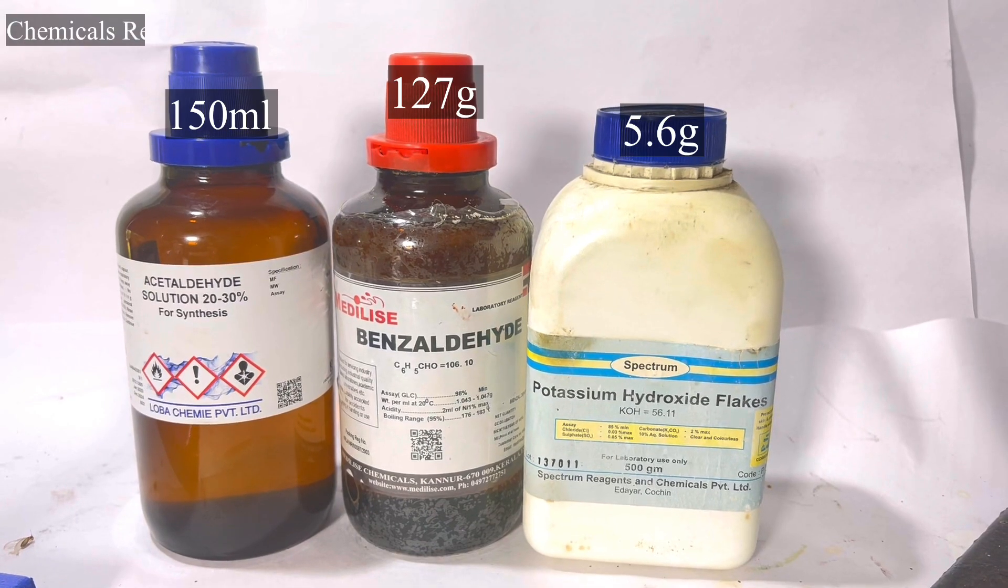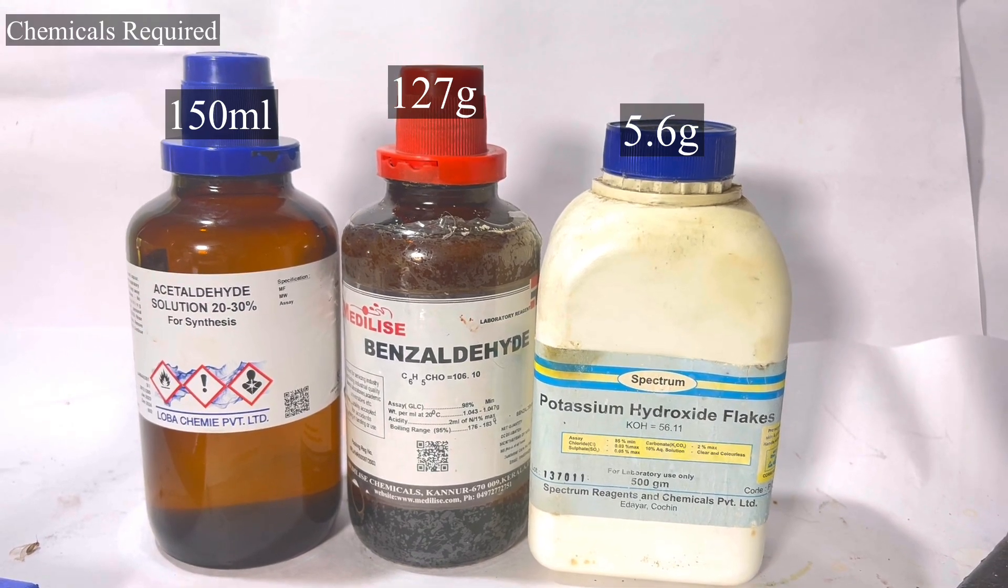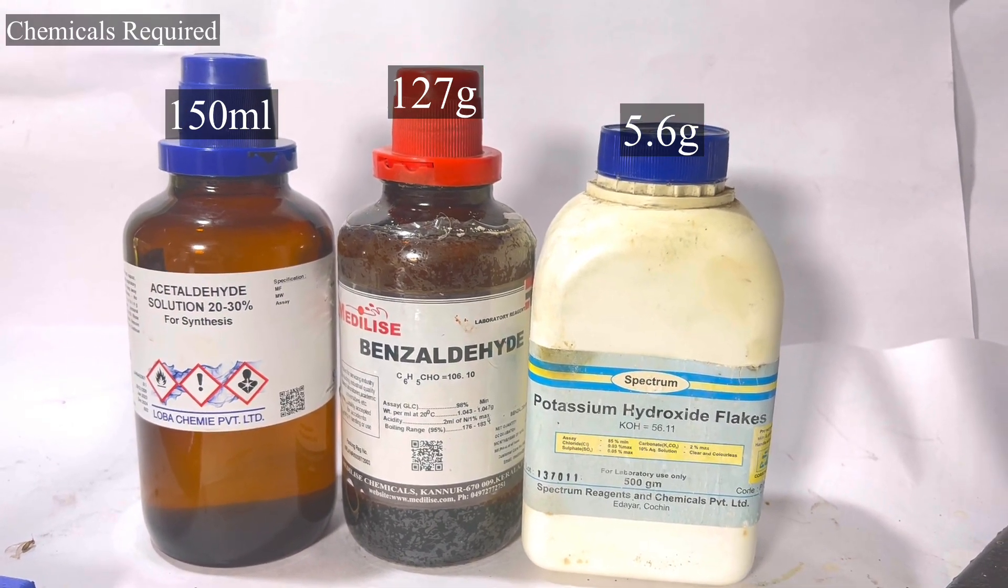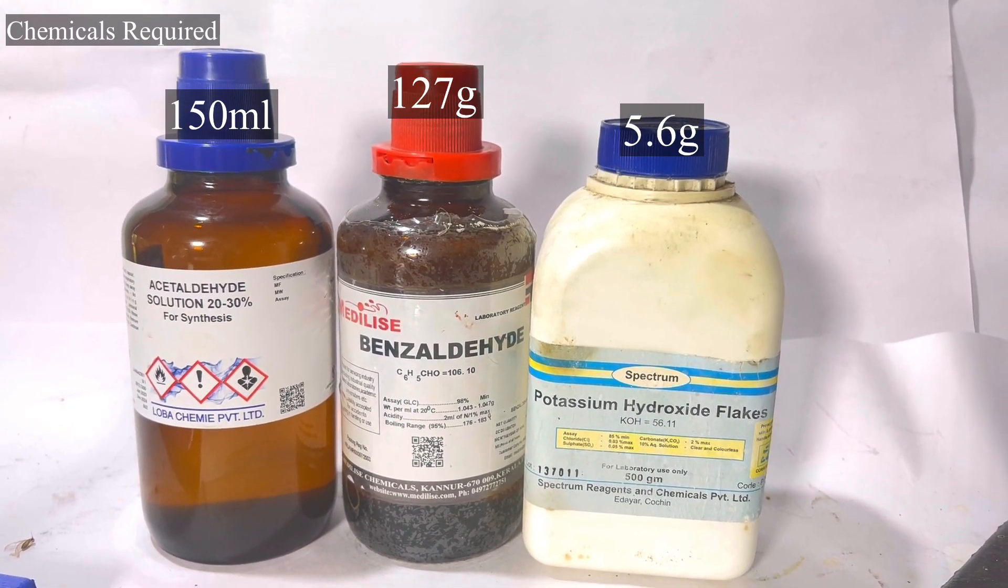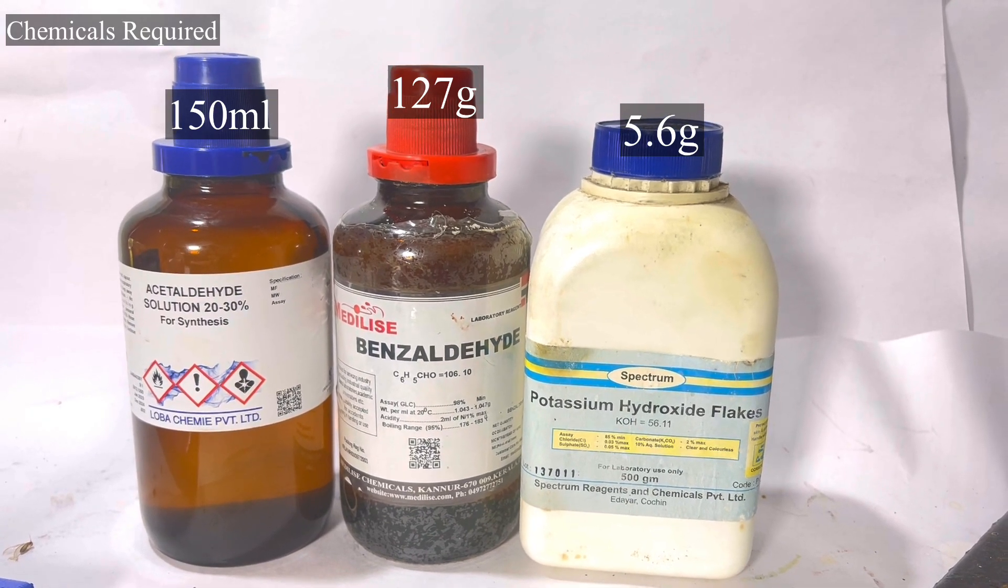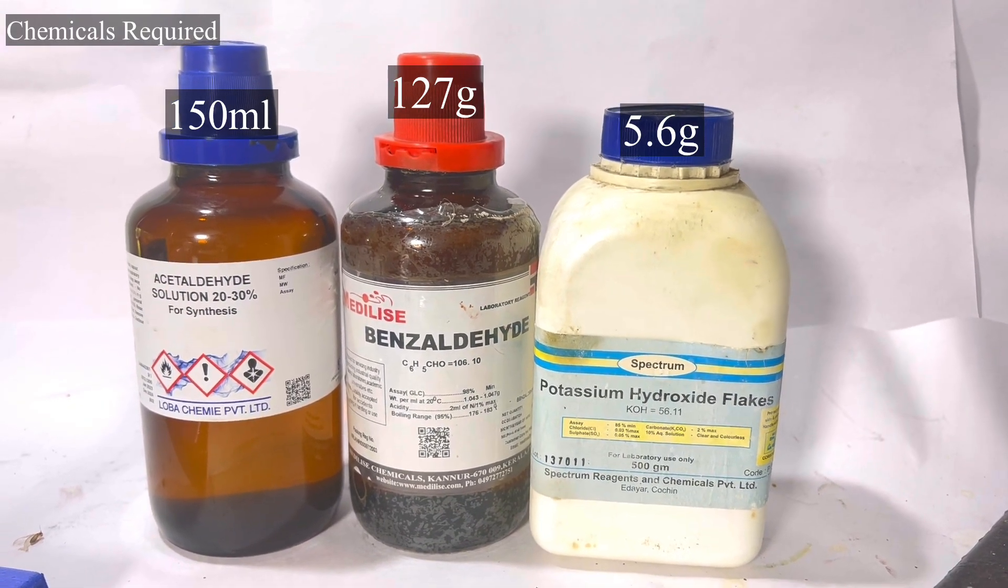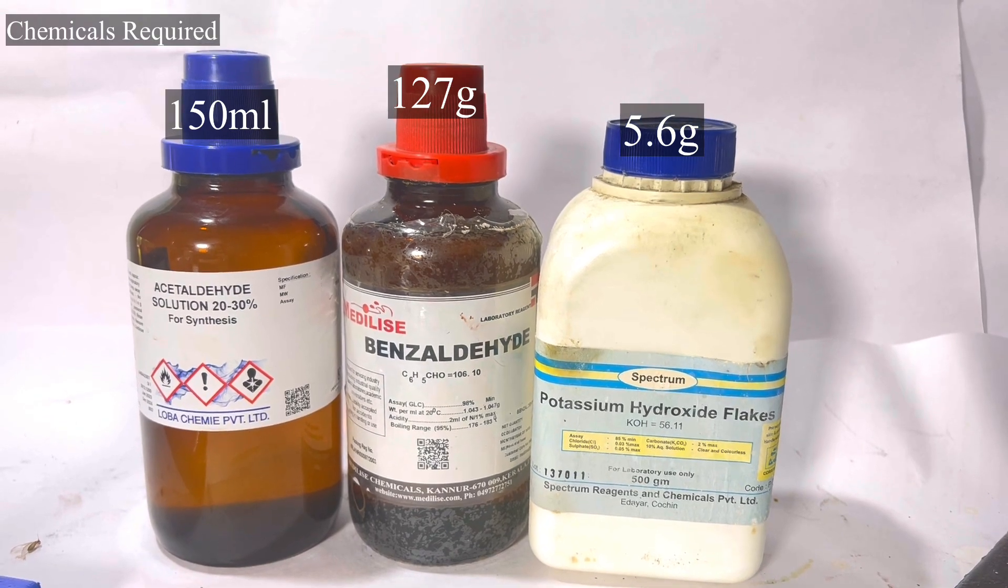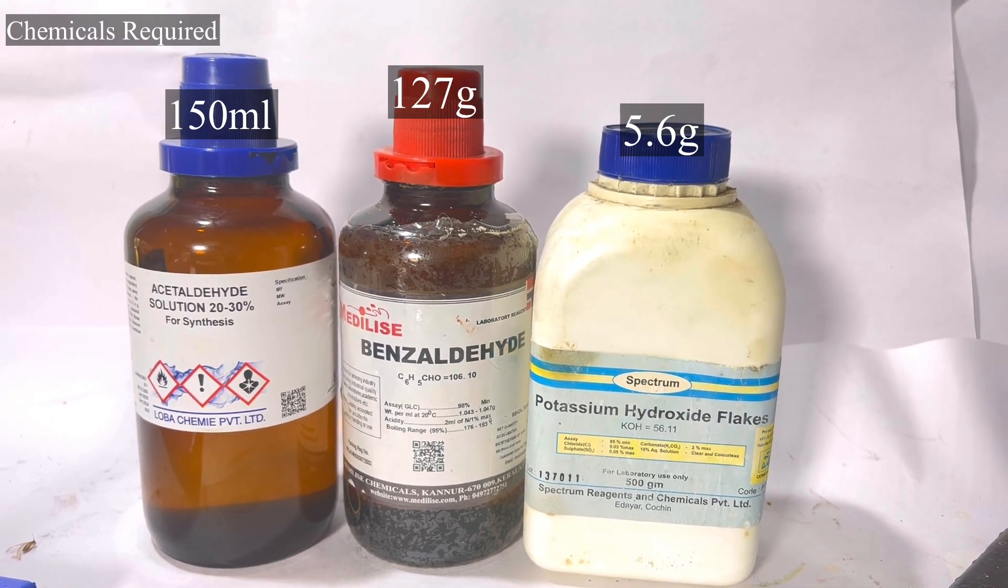Chemicals required for this synthesis are taken stoichiometrically. The reaction involves use of 1.2 moles of benzaldehyde, 1 mole of acetaldehyde and 0.5 moles of potassium hydroxide, which is 127 grams, 126 mils and 5.6 grams respectively.